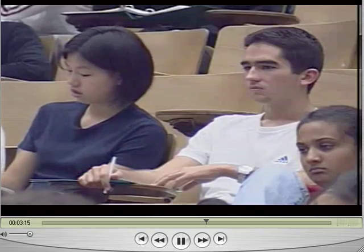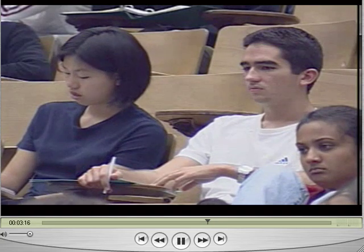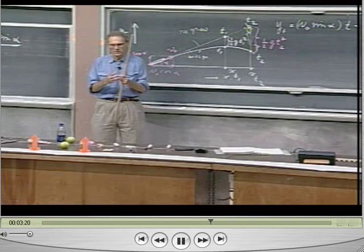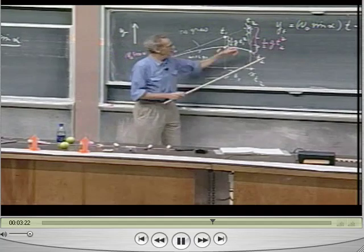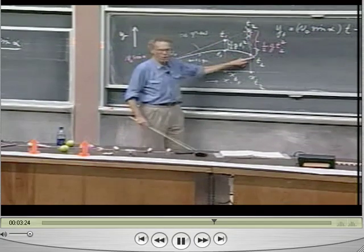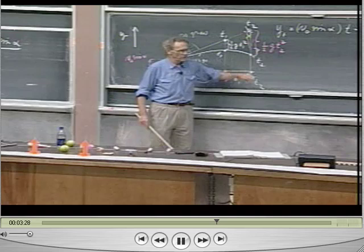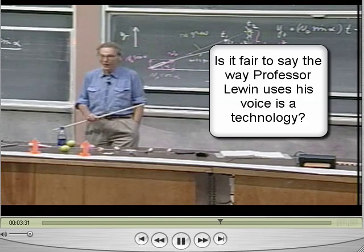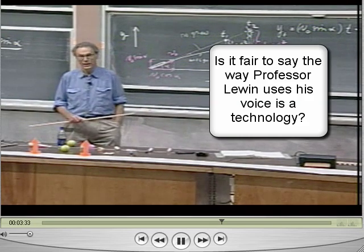And we all know that if the monkey, at time t equals zero, let go, that in t2 seconds it will have fallen exactly over a distance one-half g t2 squared. Exactly. This couldn't be more tragic. And he will be killed.